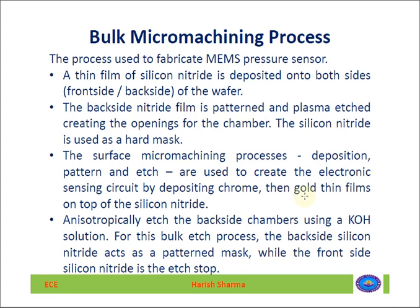The surface micromachining process — which includes deposition, patterning, and etching — is used to create the electronic sensing circuit by depositing a gold film over the top of the silicon nitride. Since the adhesive property of gold is very poor, a chrome layer is first deposited, and then the gold film is deposited on top of the silicon nitride.